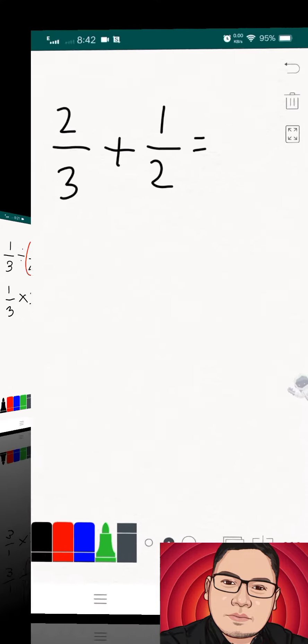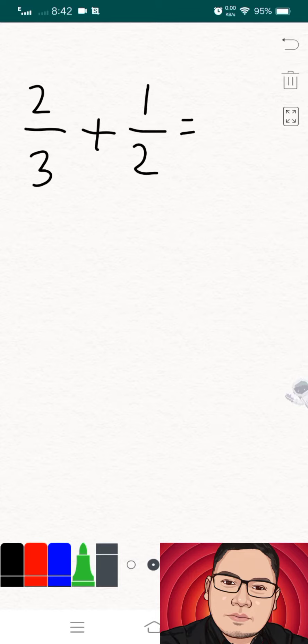And next is the addition or subtraction on fractions. Well, how to add or subtract two fractions? Well, just follow this pattern: just multiply this one, this one, and also this one.